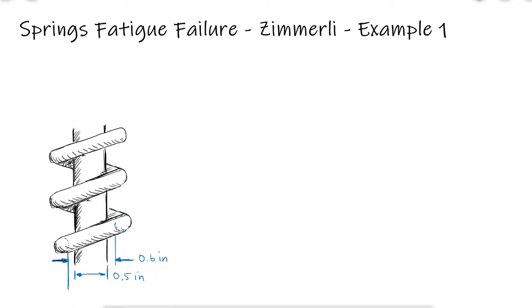This spring that has a spring index of 10 is used in a machine that will compress it from a free length of 5 inches through a stroke of 3 inches to its solid length. The spring needs to have squared and ground ends, be unpeened, and made from cold drawn wire.